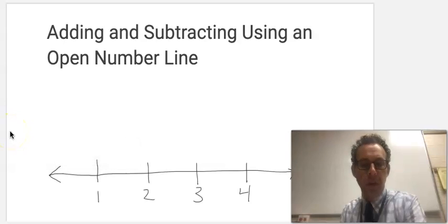To use an open number line, start with a number line and then just remove all the numbers and tick marks, leaving a number line that is completely empty or open.